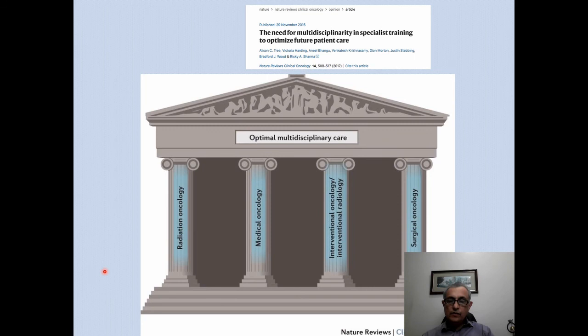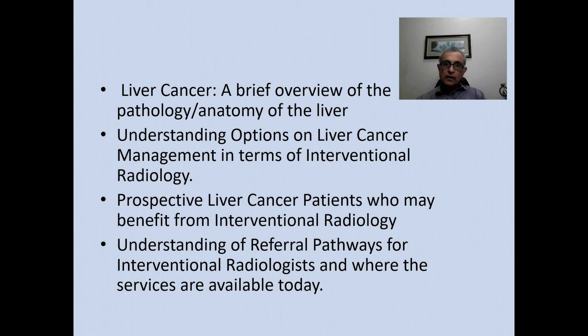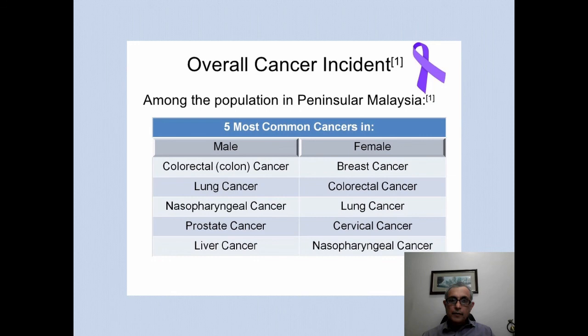As illustrated in the previous video, optimal multidisciplinary care of cancer is based on four pillars: radiation oncology, medical oncology, surgical oncology, and interventional oncology or interventional radiology. The scope of this talk includes patients with liver cancer who may benefit from interventional oncology. Among the five most common cancers in the population of Malaysia, liver cancer is number five.